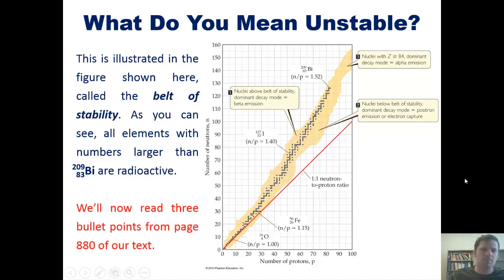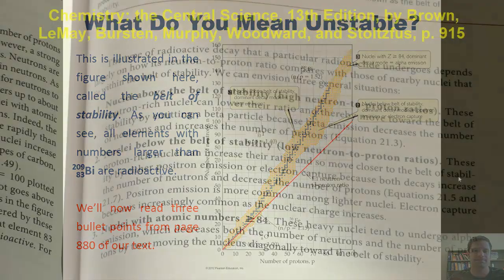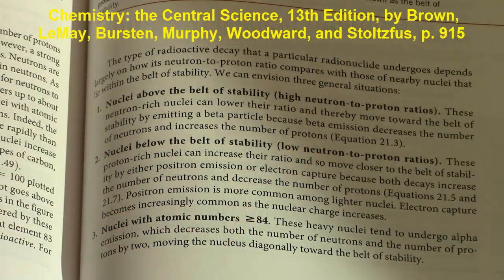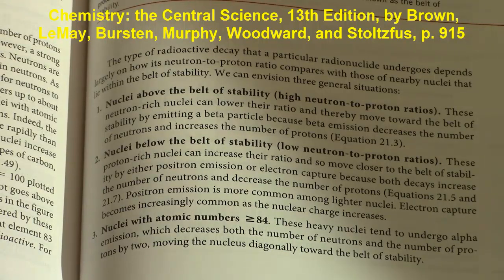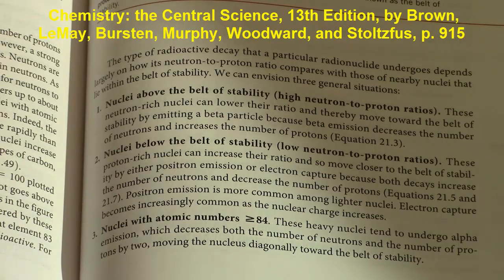We'll now continue by reading three bullet points from page 880 of our text. Referring to our figure that shows the nuclear belt of stability, nuclei above the belt of stability have a high neutron to proton ratio. These neutron-rich nuclei can lower their ratio and thereby move toward the belt of stability by emitting a beta particle because beta emission decreases the number of neutrons and increases the number of protons.